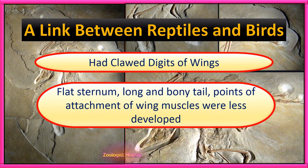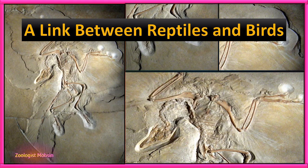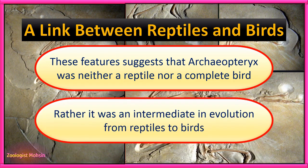Similarly, Archaeopteryx had a flat sternum, a long and bony tail, and the points of attachment for wing muscles were less developed. These less developed organs suggest it was not a complete bird but rather an intermediate. These features suggest that Archaeopteryx was neither a reptile nor a complete bird, but rather an intermediate in evolution from reptiles to birds.